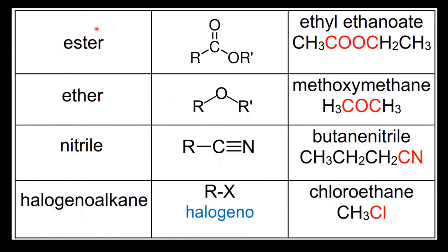Next we have the esters — this is the ester functional group and an example is ethyl ethanoate. Next we have the ethers — this is the ether functional group and an example is methoxymethane. Next we have the nitriles, which have a carbon-to-nitrogen triple bond — an example is butanenitrile.